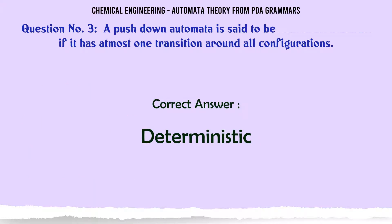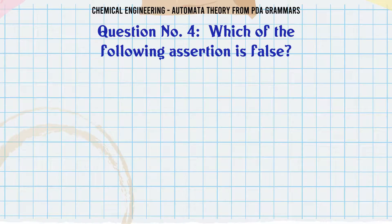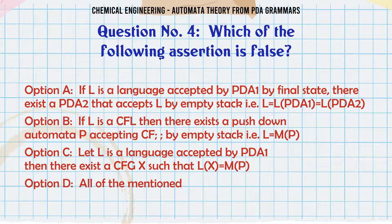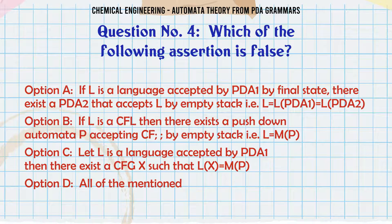Which of the following assertion is false? Option A: If L is a language accepted by PDA1 by final state, there exists a PDA2 that accepts L by empty stack, i.e., L(PDA1) = L(PDA2). Option B: If L is a CFL, then there exists a push down automata P accepting CF by empty stack, i.e., L = L(P).